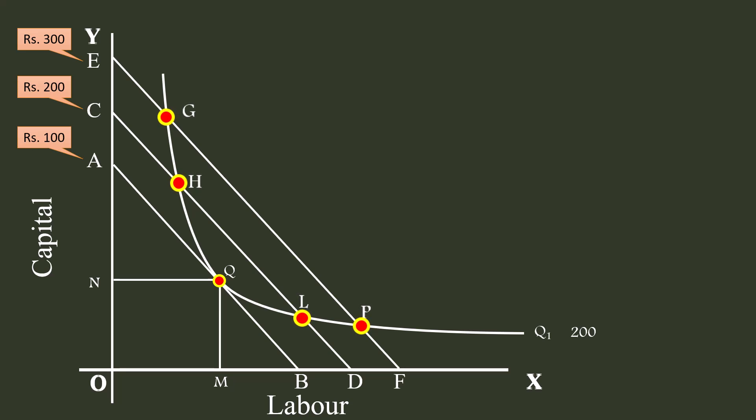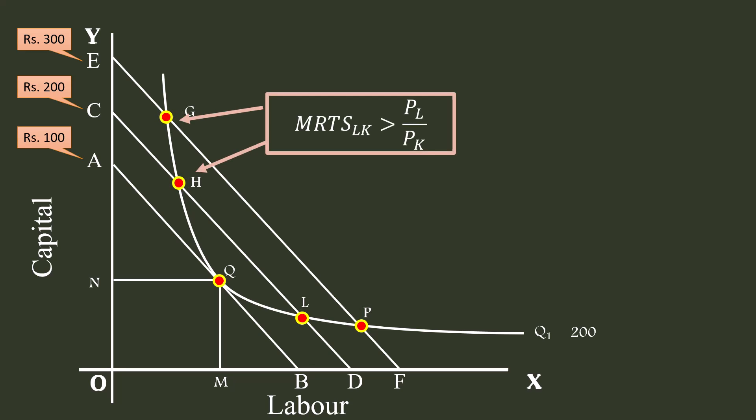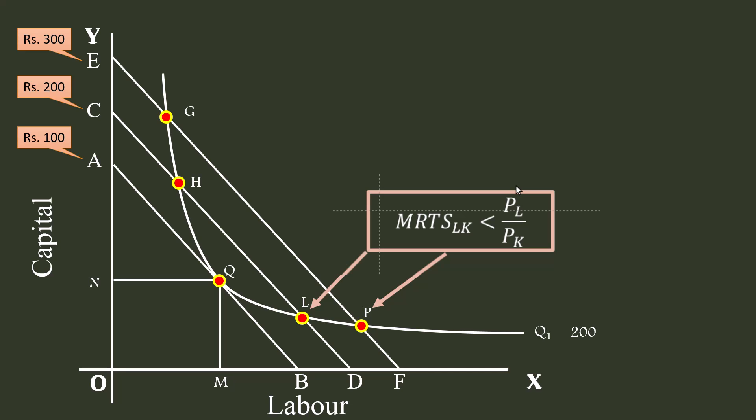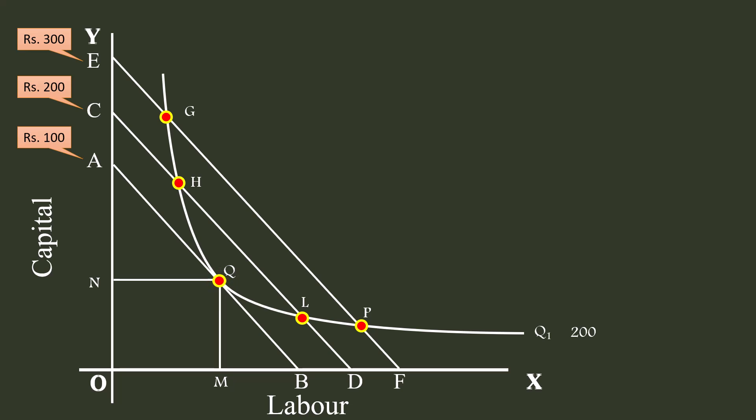They are technically efficient but not economically efficient. If the producer is at point G or H, the marginal rate of technical substitution of labor for capital is higher than the factor price ratio. It is then advantageous for him to move down along the isoquant, substituting labor for capital, and he will ultimately end up at combination Q. On the other hand, if he is at point L or P, the marginal rate of technical substitution is less than the factor price ratio, and it is advantageous to move up along the isoquant substituting capital for labor, ultimately reaching combination Q. So, combination Q is the optimum combination or least cost combination.